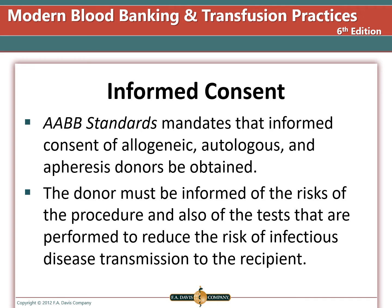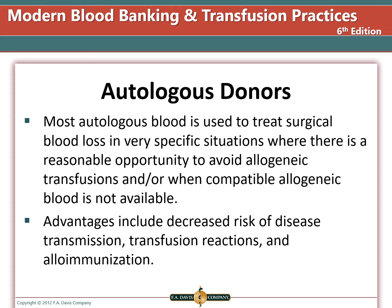AABB standards mandate that informed consent of allogeneic, autologous, and apheresis donors be obtained. The donor must be informed of the risks of the procedure and also of the tests that are performed to reduce the risk of infectious disease transmission to recipients. Autologous donation is when you donate blood for yourself prior to a planned surgery. This helps the patient avoid transfusion of blood from another person, and is also useful if the person has a rare type or an antibody that makes finding compatible blood difficult. This can decrease the risk of disease transmission, transfusion reactions, and alloimmunization.